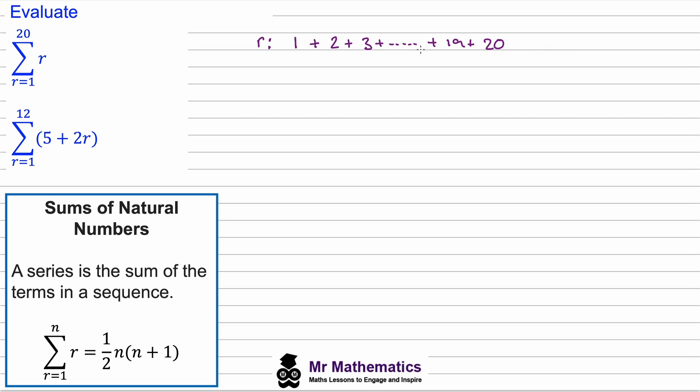So from this series then we can see we've got 20 terms, so n must equal 20. And now we can substitute this 20 into the formula we derived in the previous video. So the summation between r equals 1 to 20 of r will be equal to one half of n, which we know is 20, multiplied by 20 plus 1.